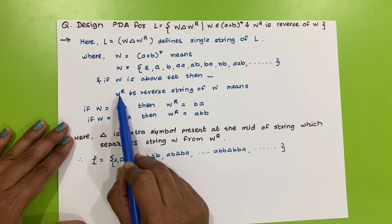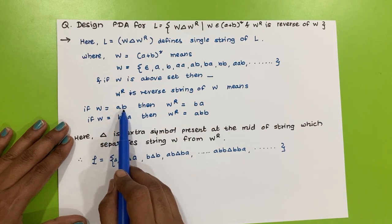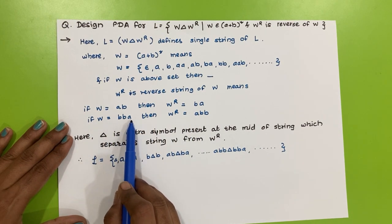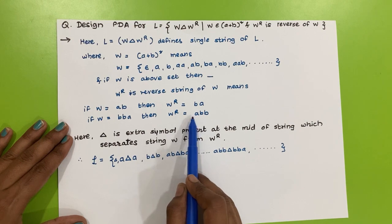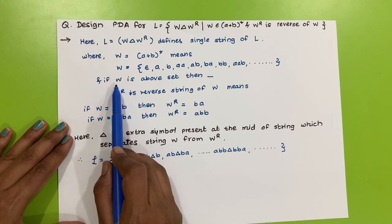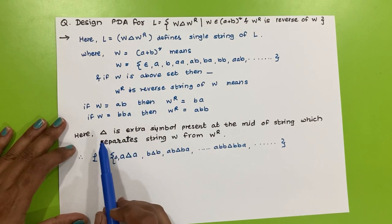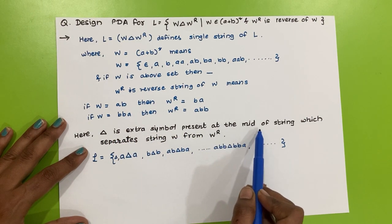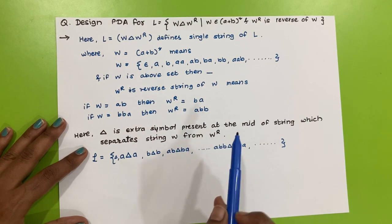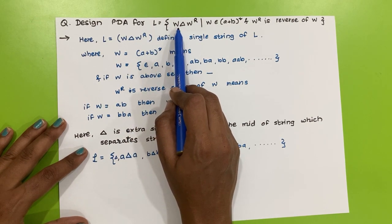Now, what will be the value of w^R? It is the reverse string of w. If w = ab, then w^R = ba. If w = bba, then w^R = abb. The triangular delta △ is the extra symbol present at the mid of the string, which separates w from w^R.